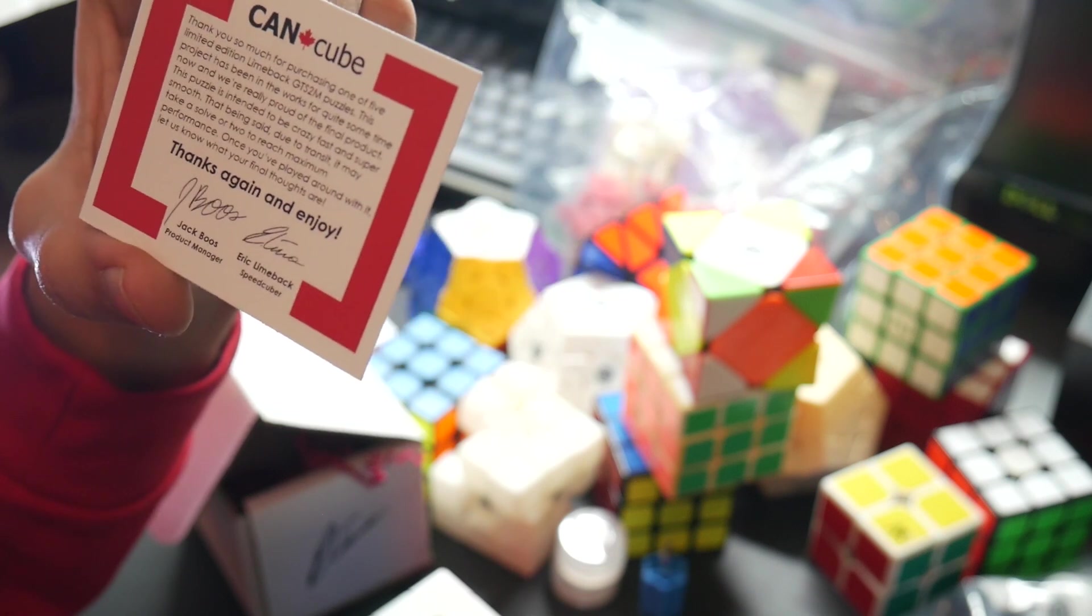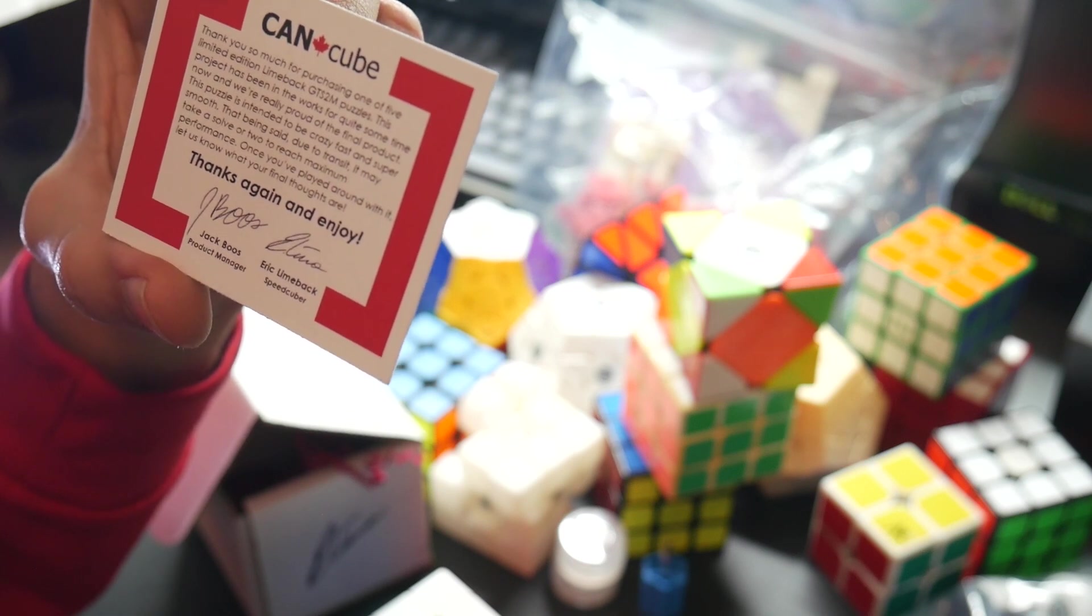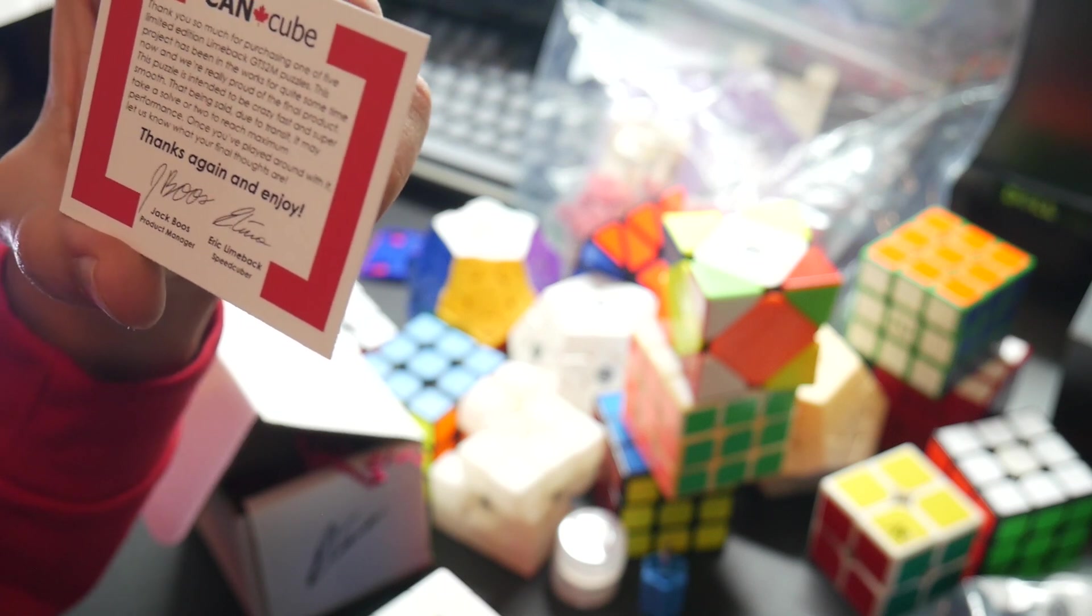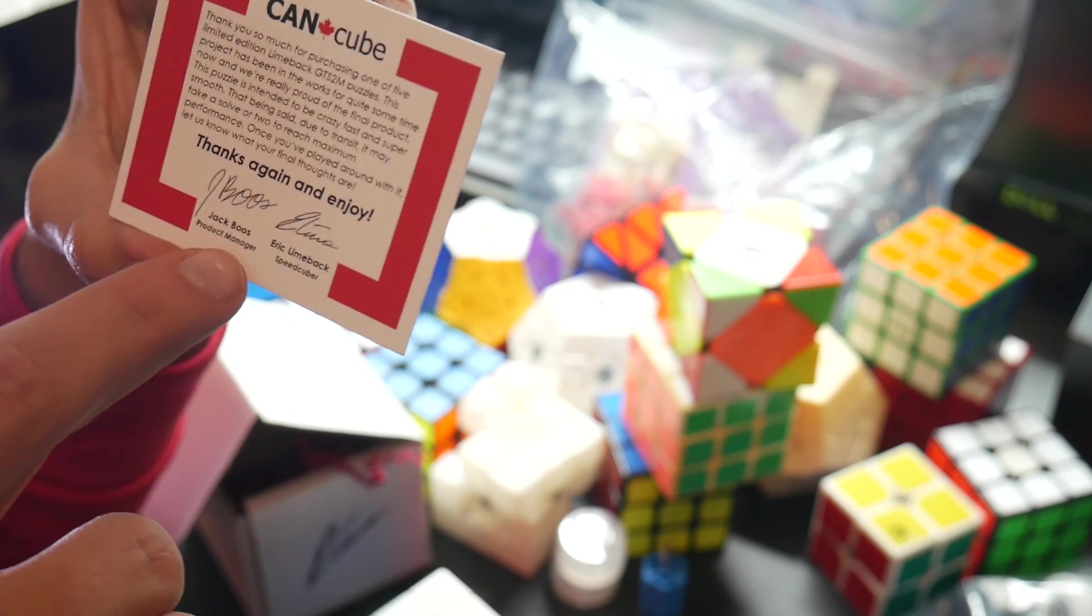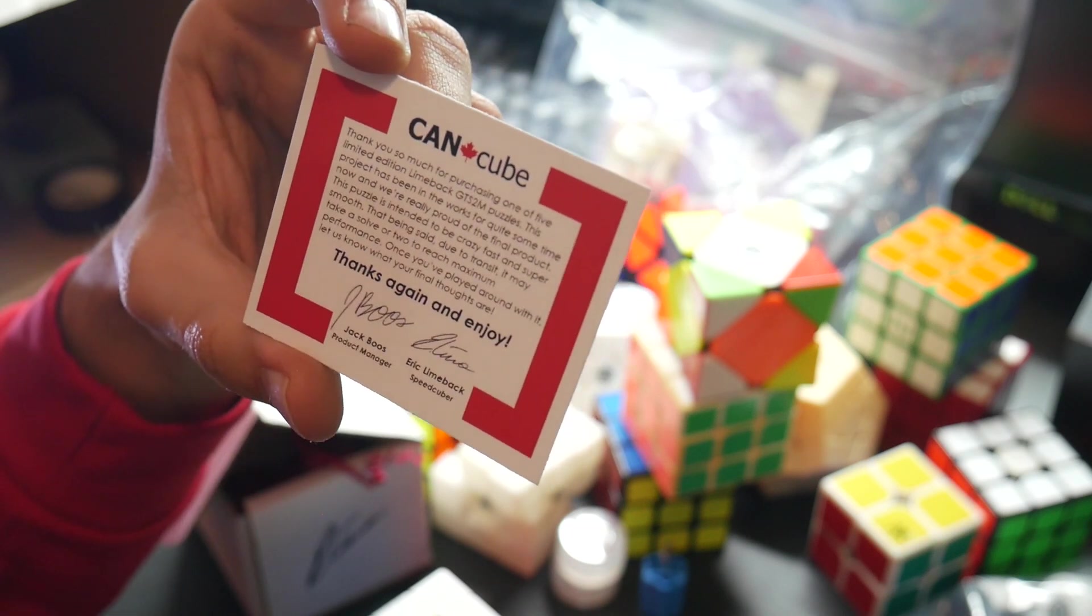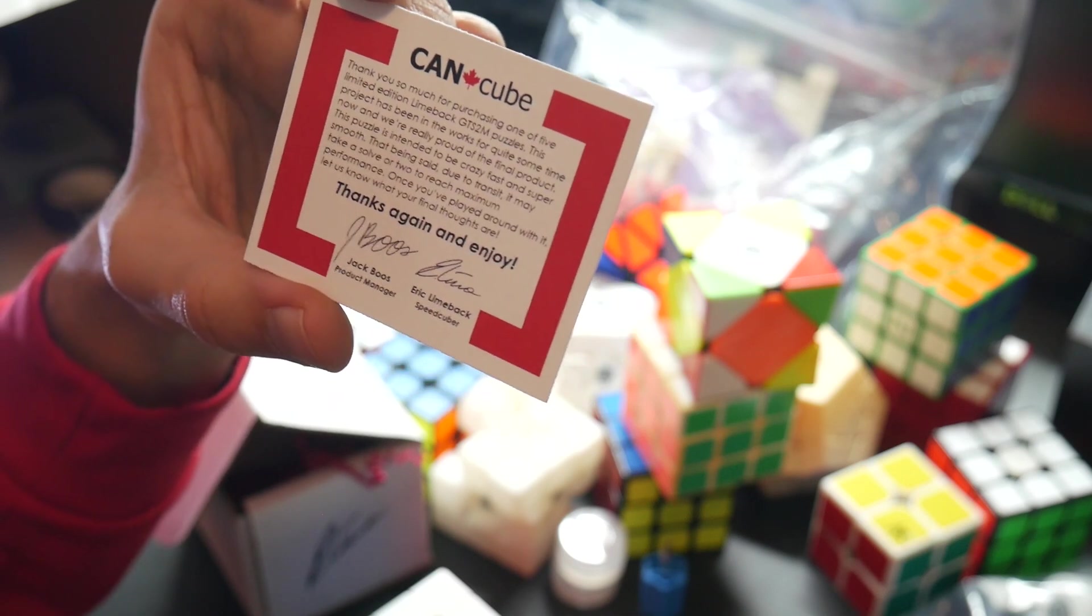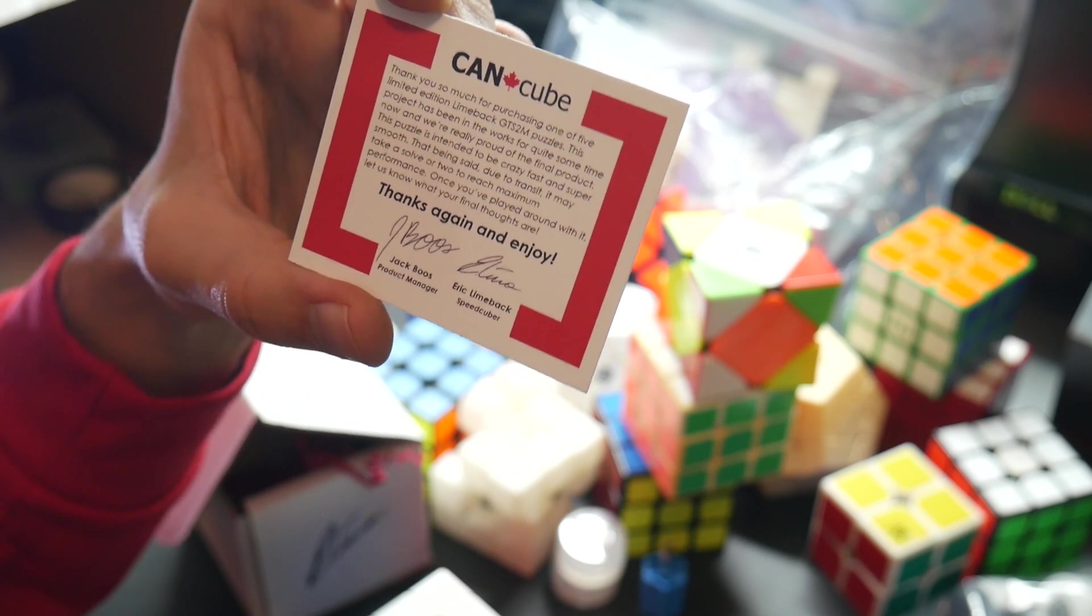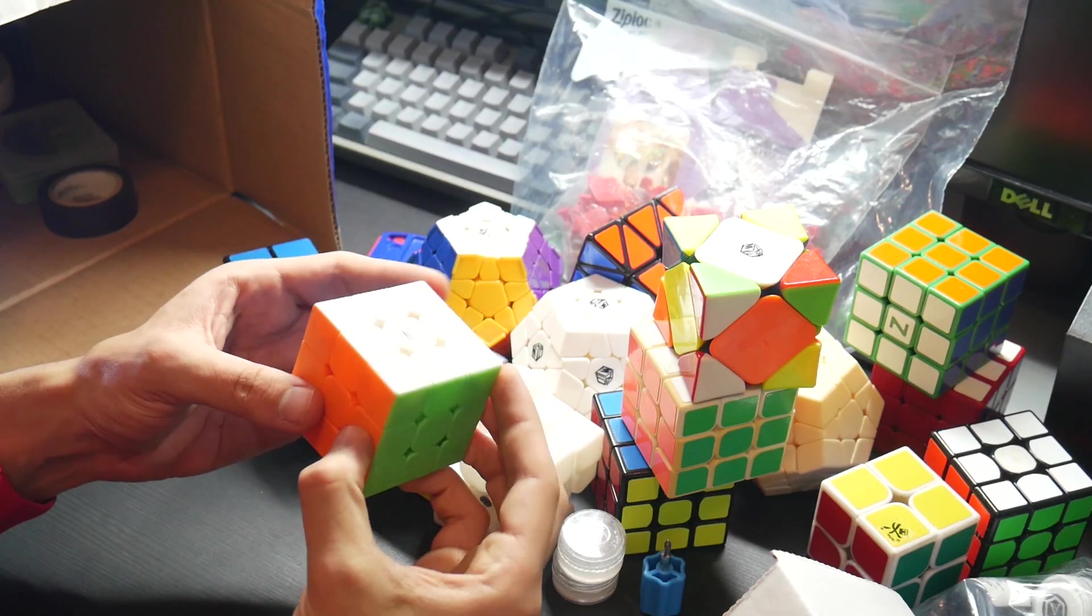This project has been in the works for quite some time now and we're really proud of the final product. This puzzle is intended to be crazy fast and super smooth. That being said, due to transit it might take a solve or two to reach maximum performance. Once you played around with it, let us know what your final thoughts are. Thanks again and enjoy. And then we have Jack, who was responsible for a lot of stuff at Can Cube including this project, making the cubes. He made a lot of Maple cubes as well - he's a legend - and then Eric as well. So super, super cool.